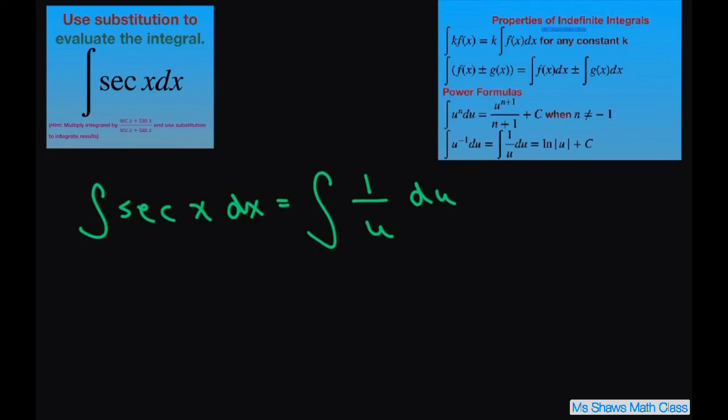This is just going to equal ln of u plus C. Now we have to plug back in our u. So this equals ln of (secant x plus tan x) plus C.